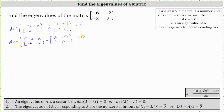And now we'll find the difference of the two matrices, which gives us the determinant of the two by two matrix where the first entry is negative six minus lambda. The second entry in row one is just negative two minus zero, or negative two. In row two, we have negative two minus zero and two minus lambda.